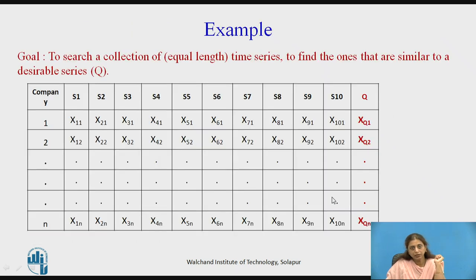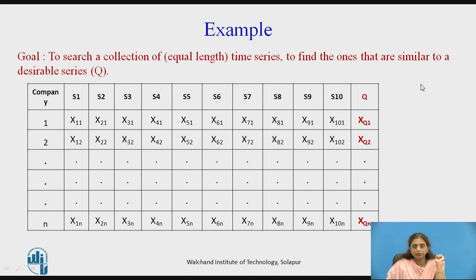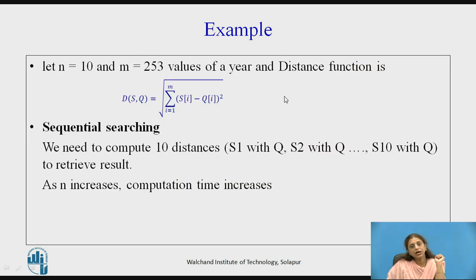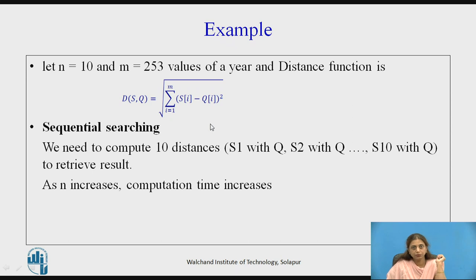Consider an example: we have time series data for various companies and want to find which company is similar to a given query Q. For example, out of 10 companies, which is similar to Q? Using sequential search with Euclidean distance and 253 values, we need to compute 10 distances — Q with S1, Q with S2, and so on — each requiring all 253 values, so computation time increases as N grows.